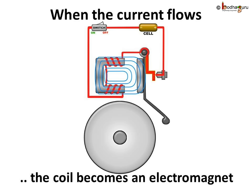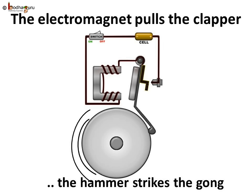Due to the current flow, the coil becomes an electromagnet. The electromagnet then pulls the clapper towards itself.